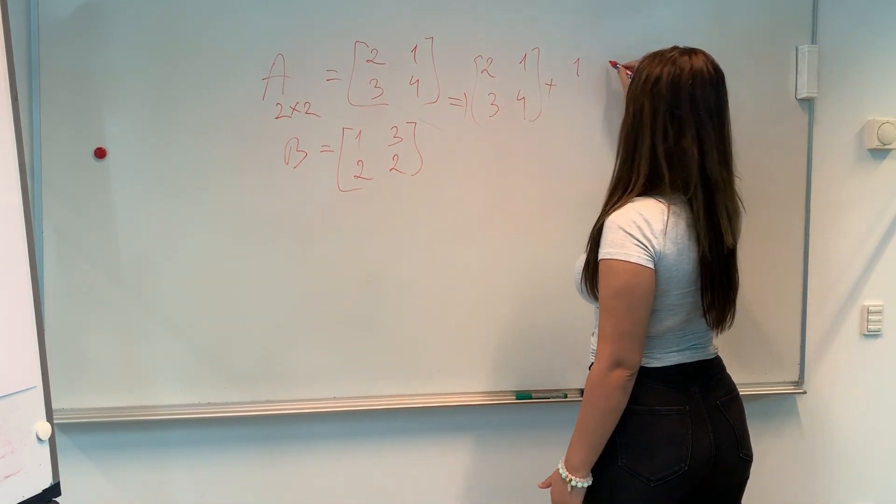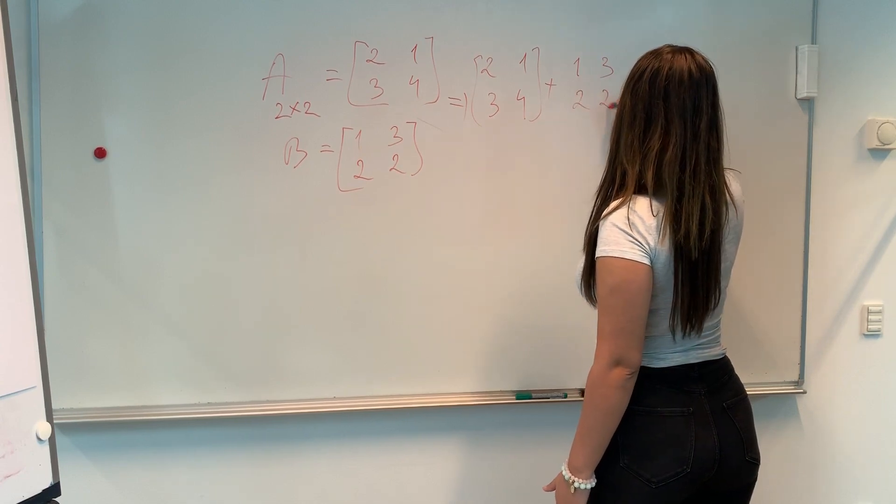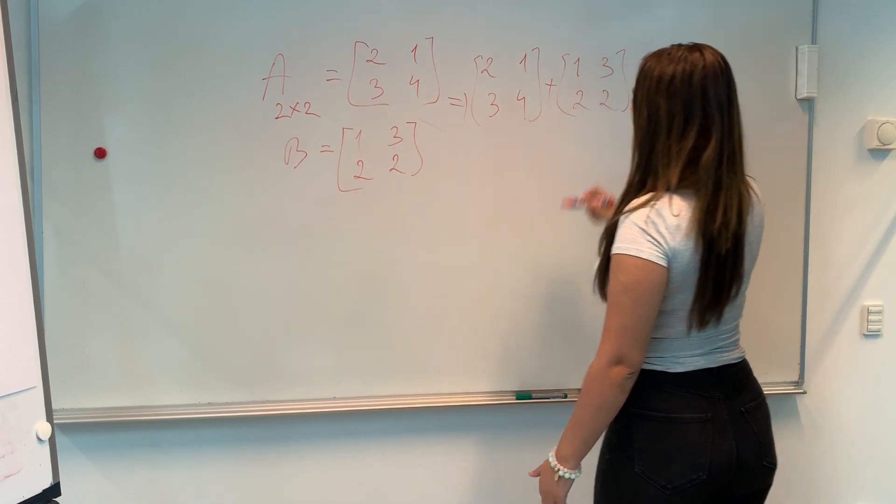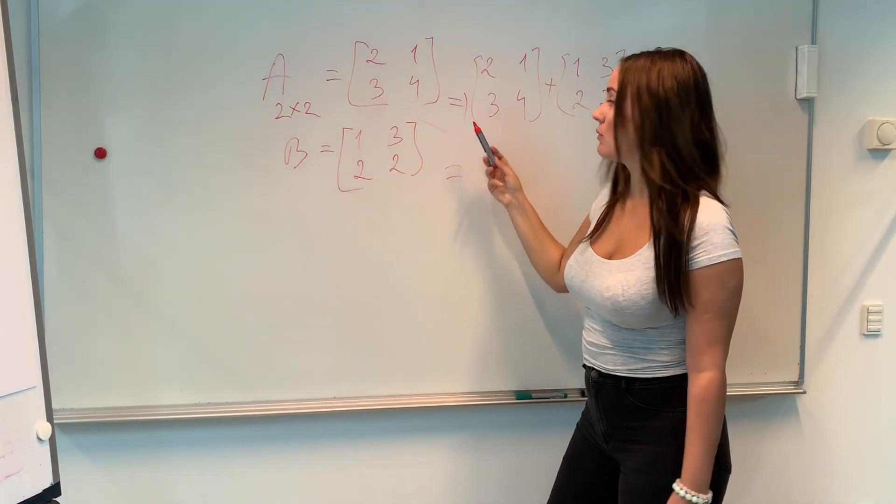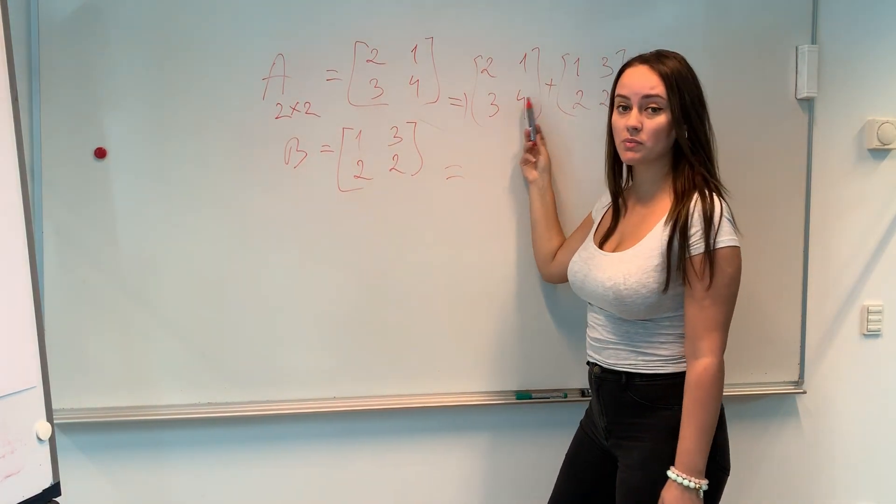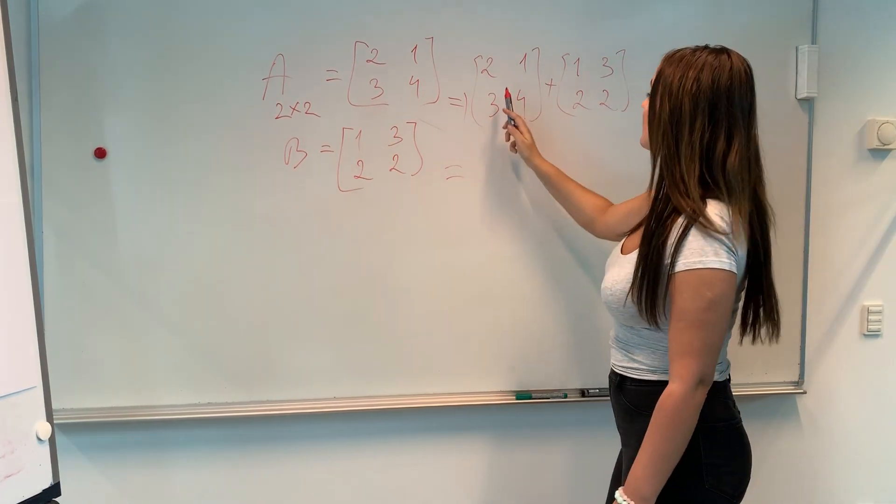And matrix B, it's also going to be a two by two matrix. And it's going to be one, three, two, and two. And I'm just going to copy them so we can see how the addition is actually made. So here, the addition is basically made intuitively. We will basically add the corresponding elements.